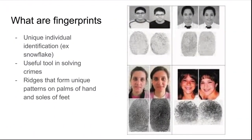Fingerprints are unique to every person. It is their individual identification, like a snowflake. Even identical twins with the same DNA will have different fingerprints. This is why we can use fingerprint identification as a tool to solve crimes.